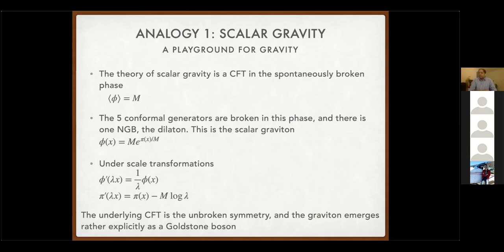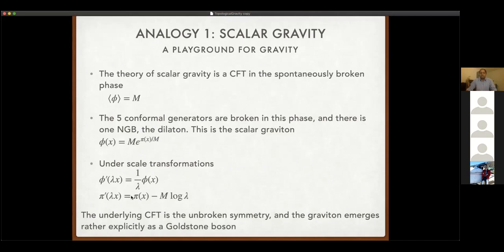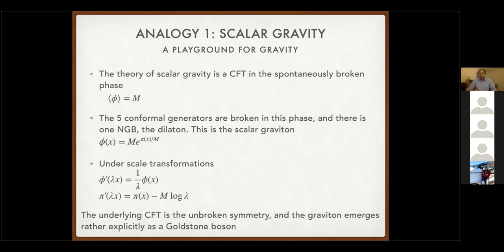Once we spontaneously break the CFT, we break the five conformal generators but get one pseudo-Nambu-Goldstone boson — the dilaton — which plays the role of the scalar graviton. We can parameterize it in exponential form or as a pi field. The pi field transforms as you'd expect a Goldstone boson under scale transformations — with a shift symmetry. Being a spacetime symmetry, the argument also transforms. The main feature is that the graviton in this case is very explicitly a Goldstone boson arising from spontaneous breaking of the CFT.